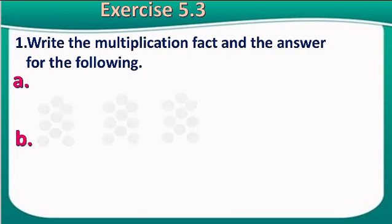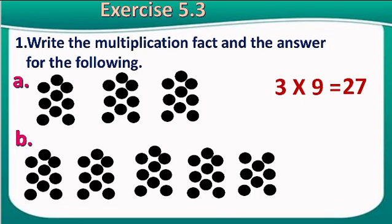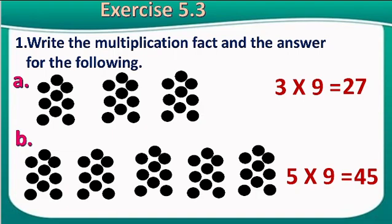See here, the first sum. There are three parts of dots, isn't it? There are nine dots of each part. Can you tell me the multiplication fact? Three nines are 27. Let us look at another example. There are five parts of dots. There are nine dots of each part. Can you tell me the multiplication fact? Five nines are 45.